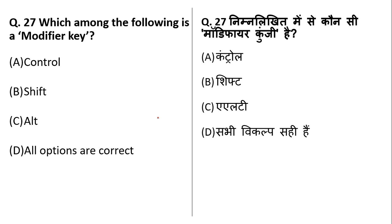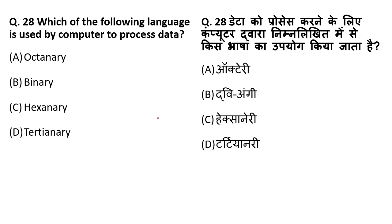Modifier keys are those keys used for doing shortcuts, like Control-C and Control-V for copy and paste. Control, Shift, and Alt are all modifier keys — so options A, B, and C are all correct answers. The language used by a computer to process data is binary language. The computer understands only binary language — zeros and ones — which is also called machine language.